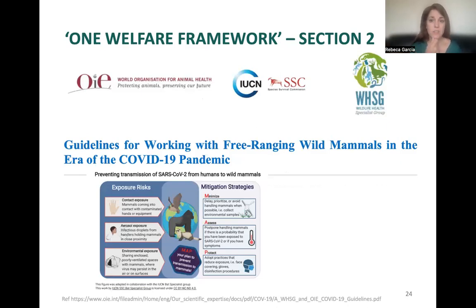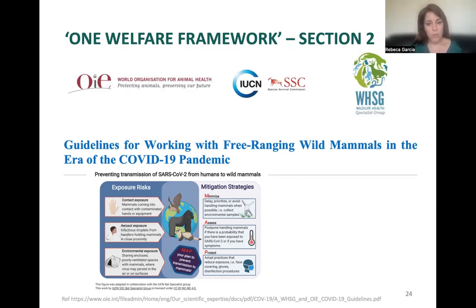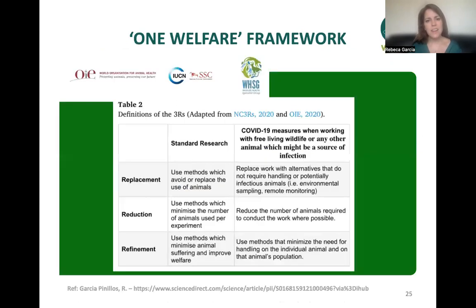We also saw guidelines from international organizations — the OIE, IUCN, and the Wildlife Health Specialist Group — on how to work with free-ranging wild mammals in the context of the COVID pandemic, focused on preventing risk to humans through risk mitigation strategies to delay and minimize contact with those animals. Looking at this through a One Welfare lens, we can see this is almost equivalent to the Three Rs framework used in laboratory research.